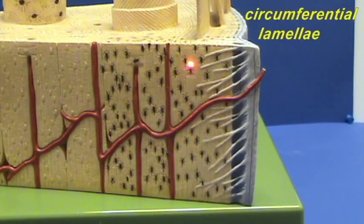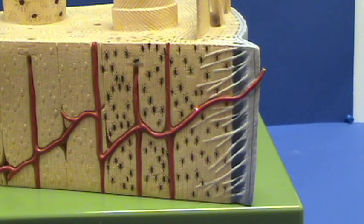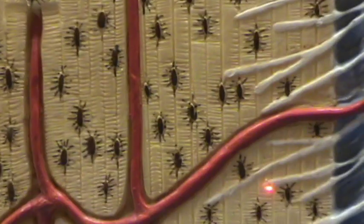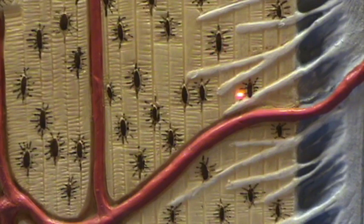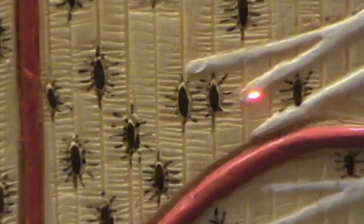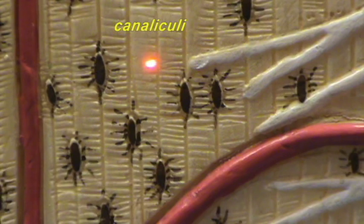Here are the circumferential lamellae again from a different perspective. Again, this is the perforating artery. You can see here osteocytes with their processes extending into the canaliculi represented by these inscribed spaces in the lamellae.